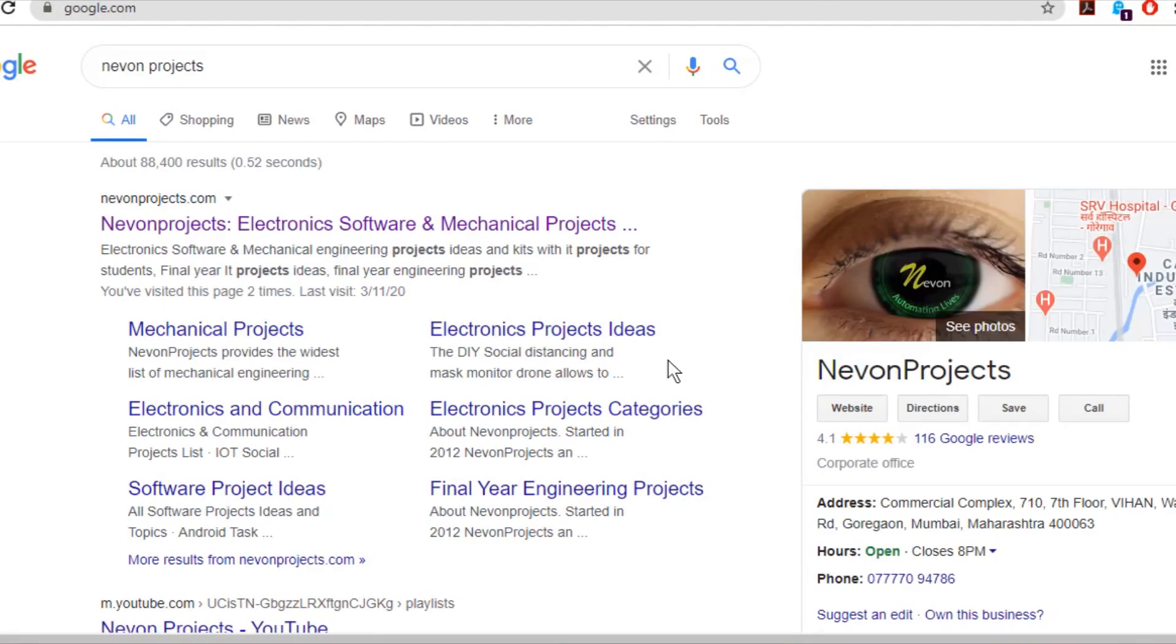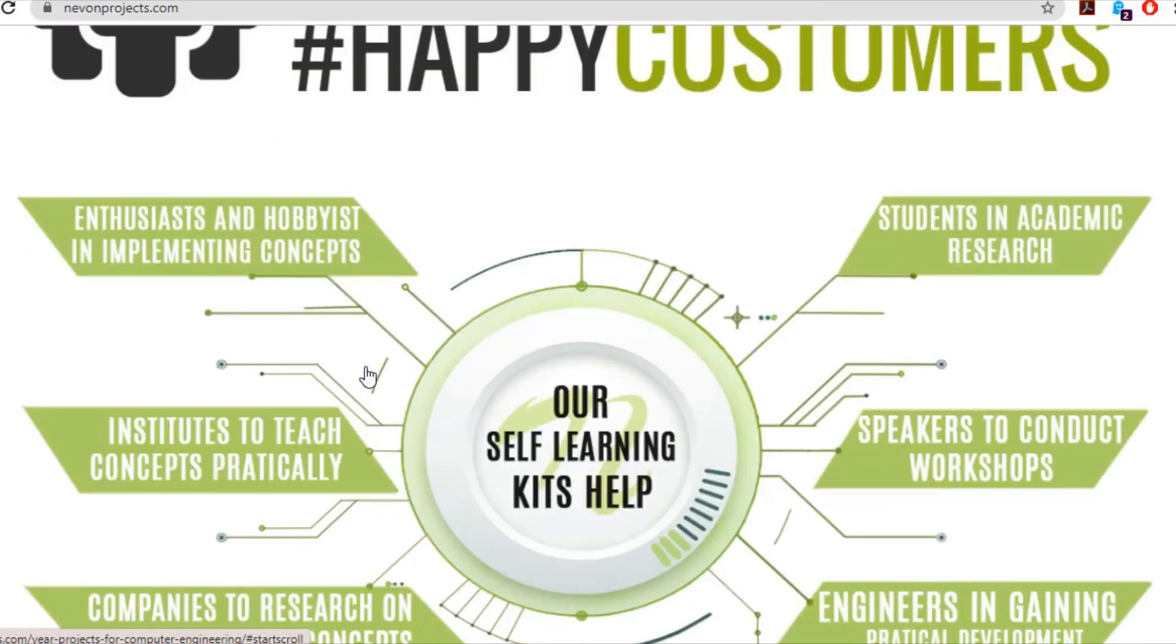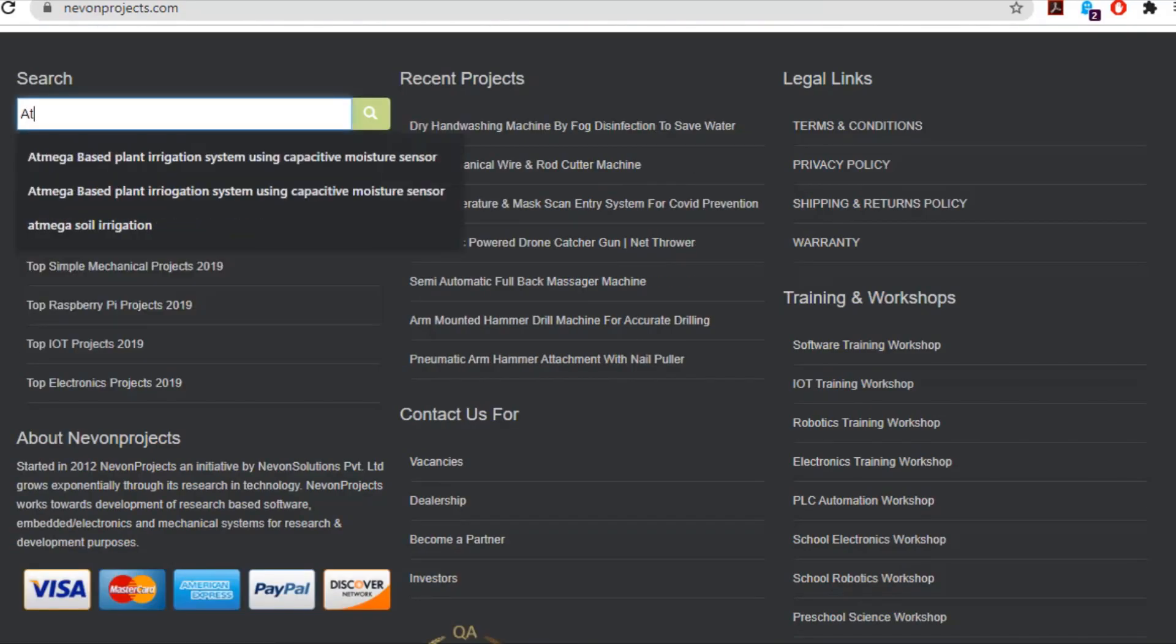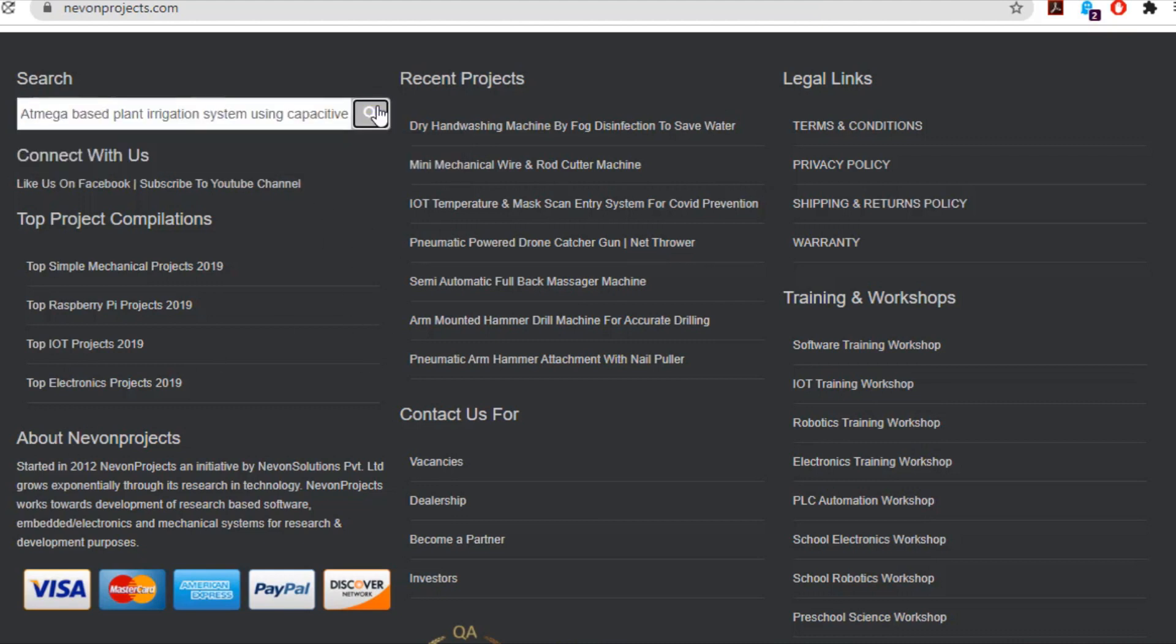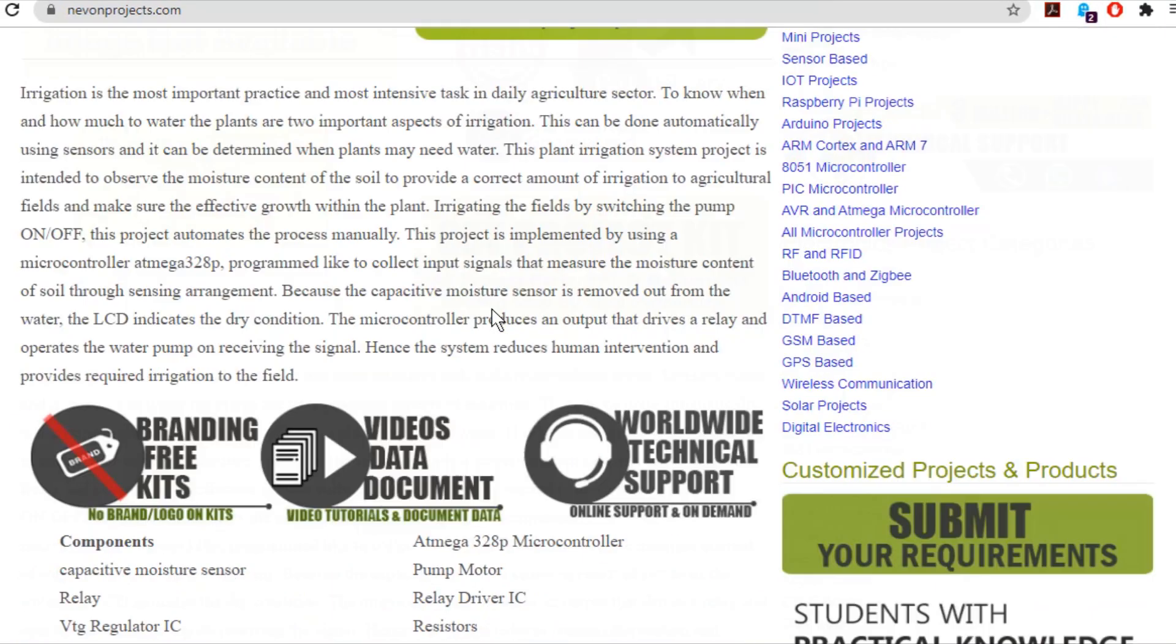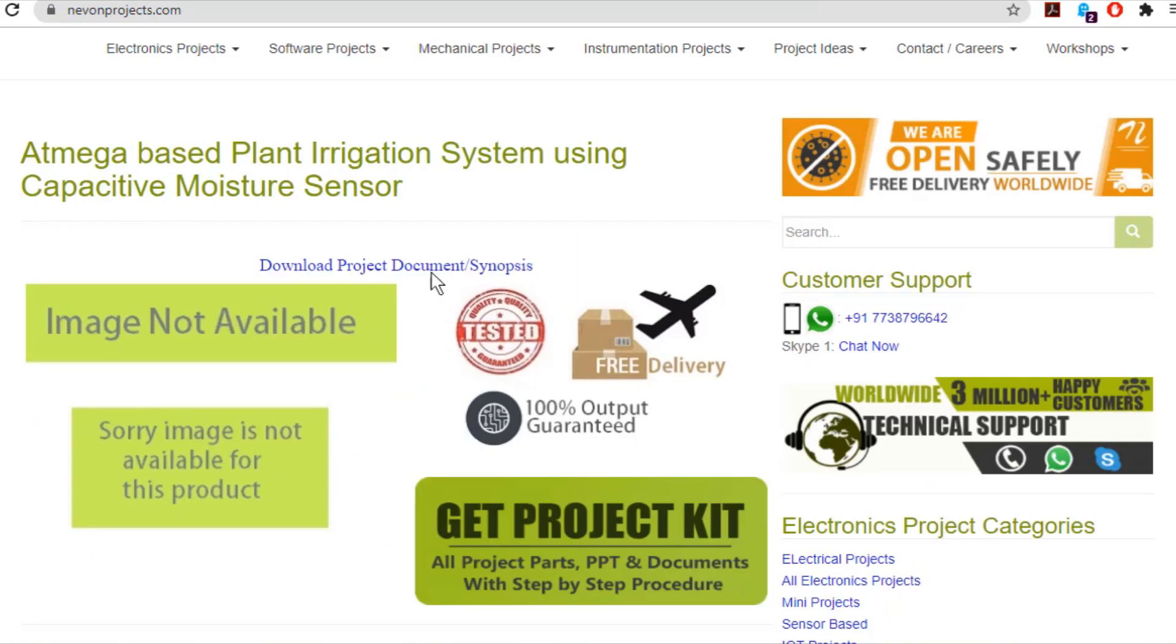To download the project document, just visit nivonprojects.com. Search the project name. Once you see the project page, click on it. Now, click on Download Document, and you can download the project documents for free.